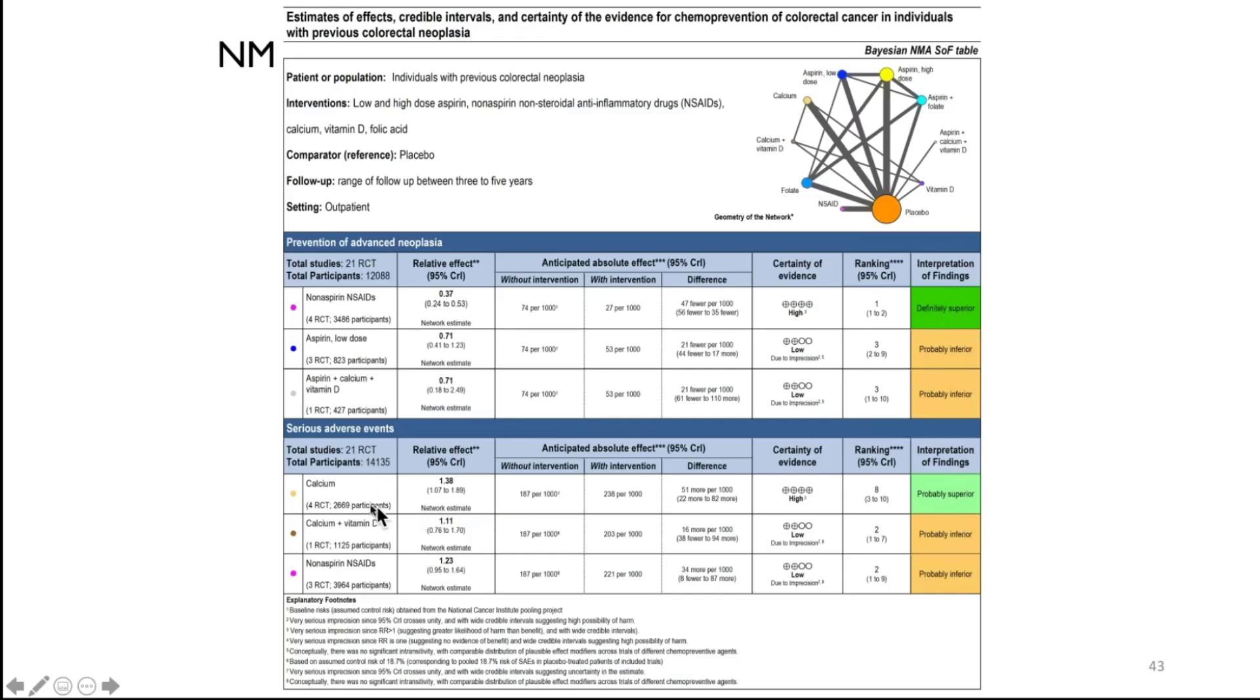And the last part of my presentation will actually focus on that. So just to follow up or to finalize that, one would then under serious adverse events, if we had decided that those were the three most promising interventions, one would then list non-aspirin NSAIDs here on top, and aspirin low-dose and aspirin calcium vitamin D at the bottom row, to provide a summary of both benefits and harms.